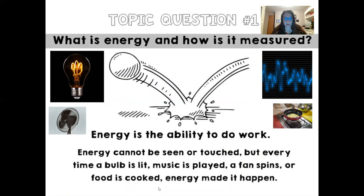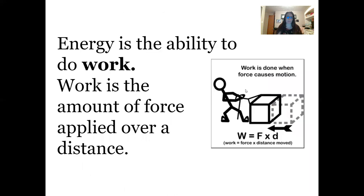Topic number one: what is energy and how is it measured? Energy is defined as the ability to do work. Energy cannot be seen or touched, but when a light bulb is lit, music is played, a fan spins, or food is cooked, energy made it happen. Energy is all around us, and its definition is the ability to do work. Work is defined in science and physics as the amount of force applied over a distance — we can calculate that using what we learned about forces.